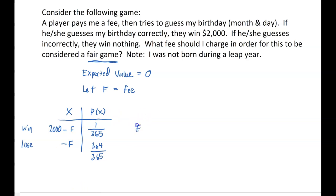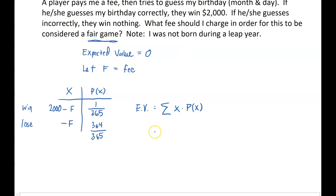Now we can compute the expected value for the game, and I'll remind you the expected value is just the sum of the product of each outcome and its corresponding probability. So for this particular game, I'm gonna have (2000 minus the fee) times 1 out of 365, plus minus F times 364 out of 365. And again, our goal here is for the expected value of this game to come out to exactly zero.